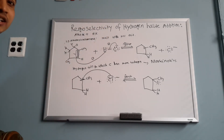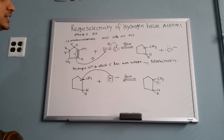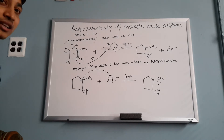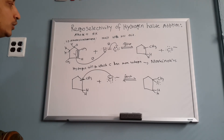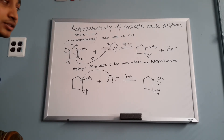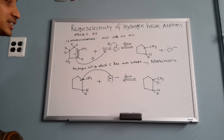Why do you need Markovnikov's rule? The only reason is that this is an unsymmetrical double bond. When the double bond is unsymmetrical, you need Markovnikov's rule to determine where hydrogen and halide go. In my next video you will see the anti-Markovnikov rule, where Markovnikov's rule does not apply.